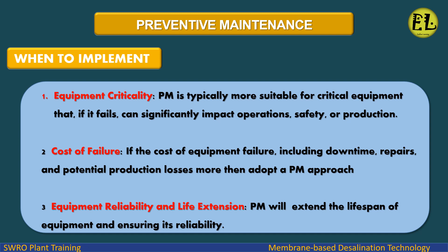When to implement PM: First, equipment criticality — PM is typically more suitable for critical equipment that, if it fails, can significantly impact operations, safety, or production. Second, cost of failure — if the cost of equipment failure, including downtime, repairs, and potential production losses, is high, adopt a PM approach. Third, equipment reliability and life extension — PM will extend the lifespan of equipment and ensure its reliability.